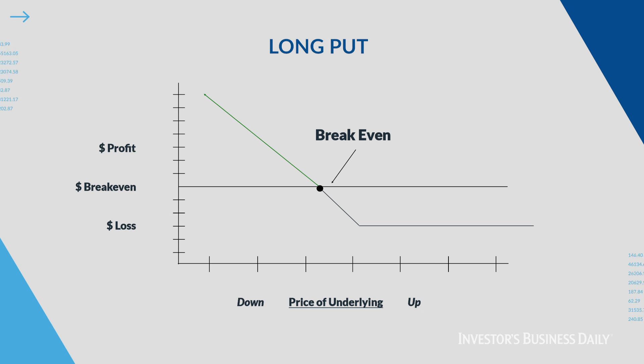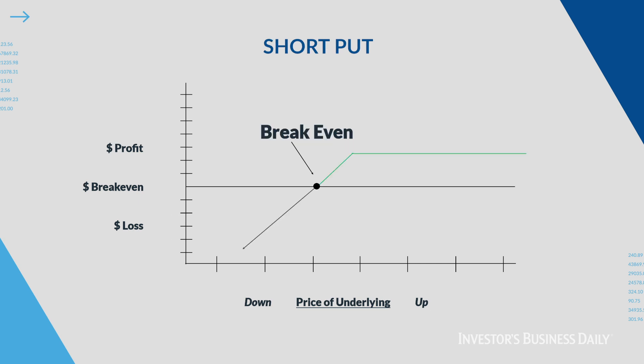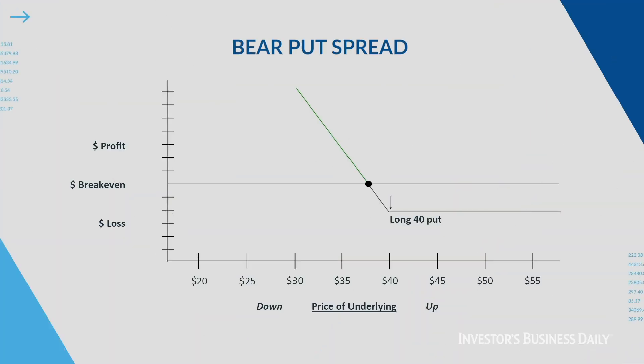The risk graph of the long put shows that as price continues to fall, we have essentially unlimited profit potential until the stock reaches zero, but our loss is capped. When we combine that with the risk graph of the short put, we essentially continue to lose money as the stock goes down, but as the stock goes up we generate a profit.